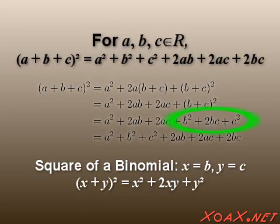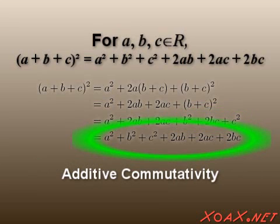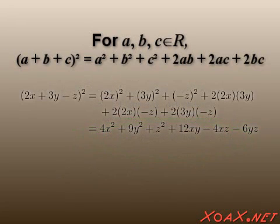Another application of the square of a binomial formula, and the third term becomes b squared plus 2bc plus c squared. Rearranging our terms via additive commutativity gives us our final result.